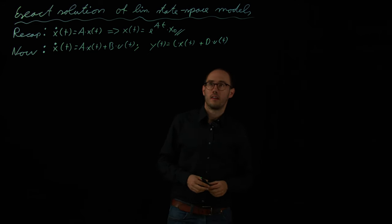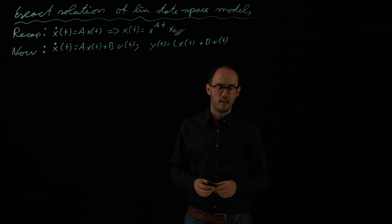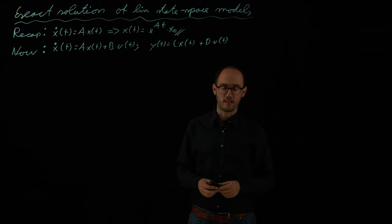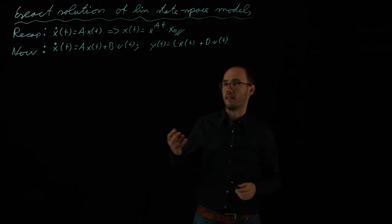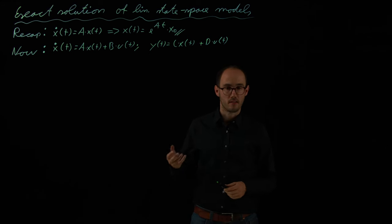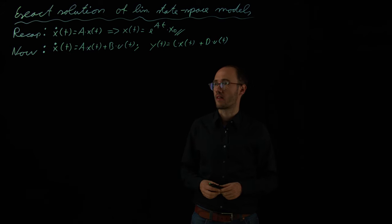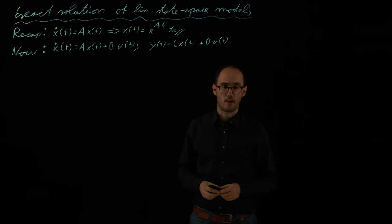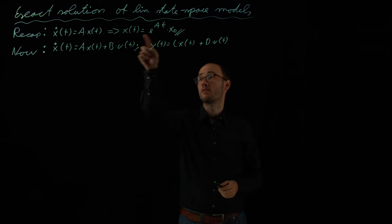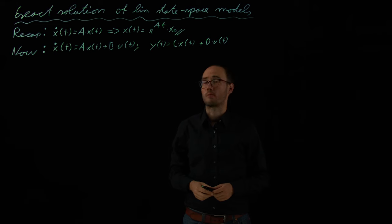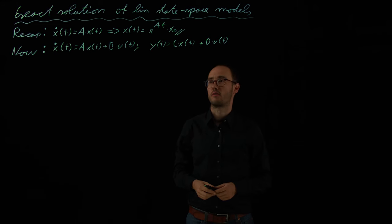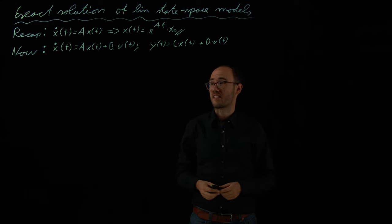Hello everyone. In this video we are going to discuss the exact analytical solution of a linear ODE in the state space, because we will need that also for subsequent discussions, for example on system properties like observability. If we want to calculate the system response for a linear equation, as we have already seen in the autonomous equation without any inputs, we can do this in an analytical closed form, which is very nice because it's handy, it's fast, it's exact.